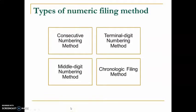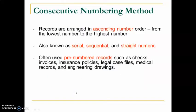This is Chapter 5.1 on numeric filing, Part 2. There are four types of numeric filing methods: consecutive numbering method, terminal digit, middle digit, and chronologic filing. Let's have a look at them one by one.